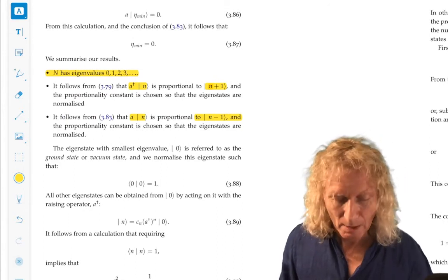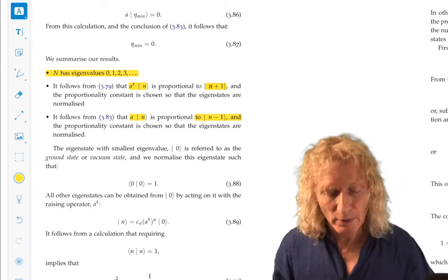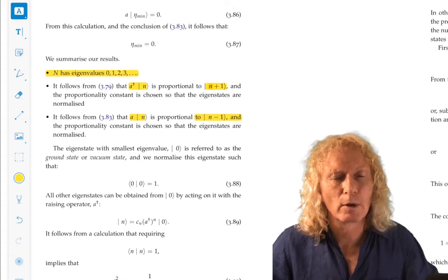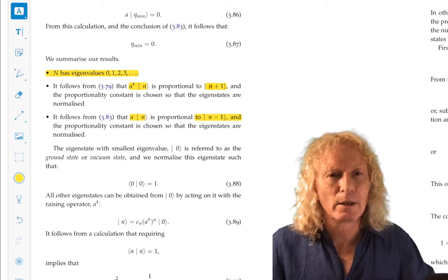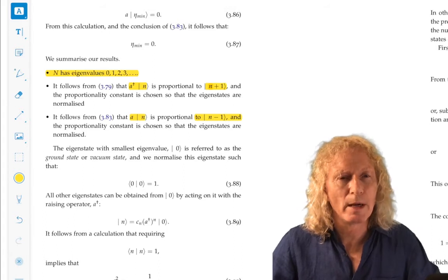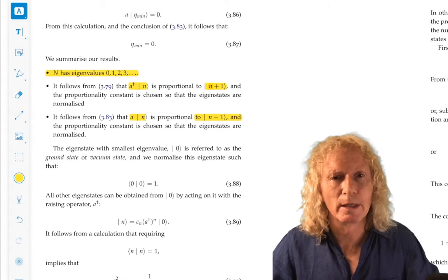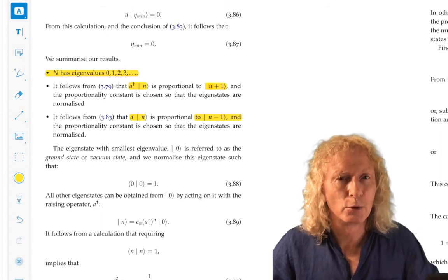We'll stop there. So we've derived all of the eigenvalues of the Hamiltonian for the harmonic oscillator. And what are they? They're h-bar omega times n plus a half, where n goes from zero to infinity.